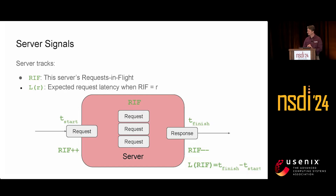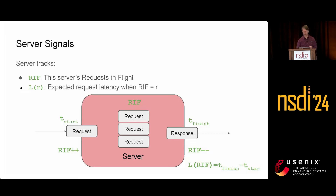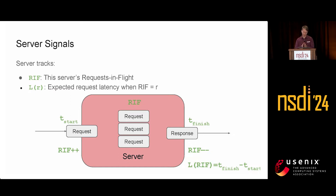At the very core, we instrument the server with two signals. One is requests in flight at the server — the number of requests that have landed but not yet exited. Whenever a request comes we increment the counter, and decrement it when it exits. We also track the latency of how long a request takes to process. We measure start and finish time, and keep a table of latencies indexed by request-in-flight level, giving us a load curve of expected latency at a given number of requests in flight.